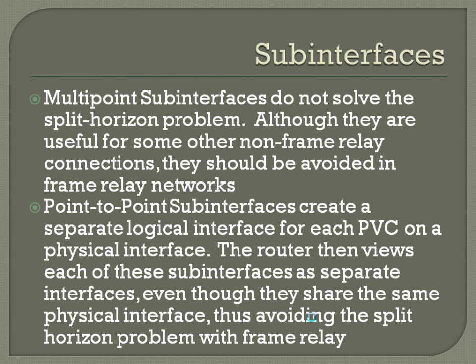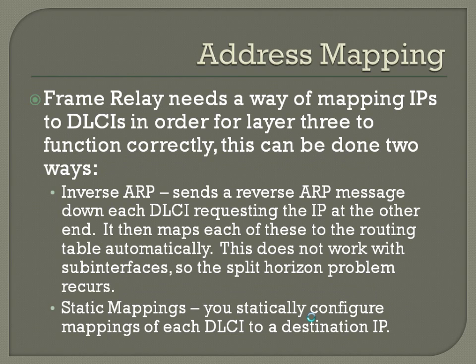Address mapping: frame relay needs a way of mapping IPs to DLCIs in order for layer 3 to function correctly. This can be done two ways. One way is inverse ARP, which sends a reverse ARP message down each DLCI requesting the IP at the other end, then receives that information and maps each to the routing table automatically. This does not work with sub-interfaces, so the split horizon problem recurs. Static mappings is the other option — and the preferred one. You statically configure mappings of each DLCI to the destination IP on the other end.